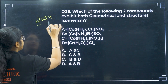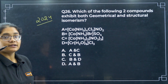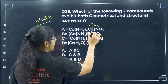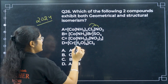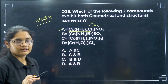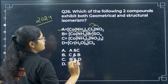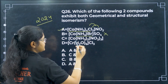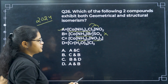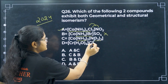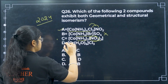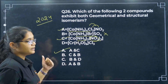Next, which two compounds exhibit both geometrical and structural isomerism? This is a 2024 question. Option A can show ionization isomerism (structural isomerism) and geometrical isomerism — so A is in the answer. Option C can show facial and meridional isomerism and since NO2 is present, also linkage isomerism (structural isomerism). Both A and C satisfy the condition — option A.